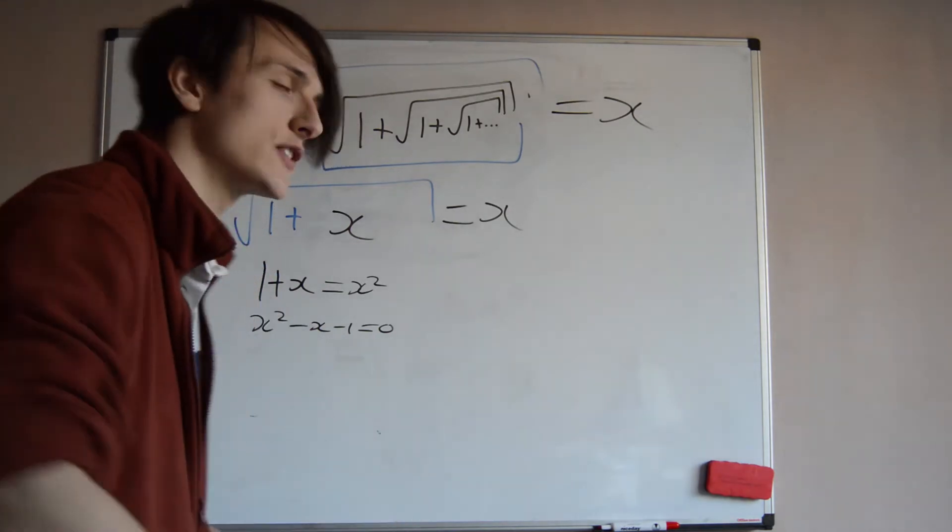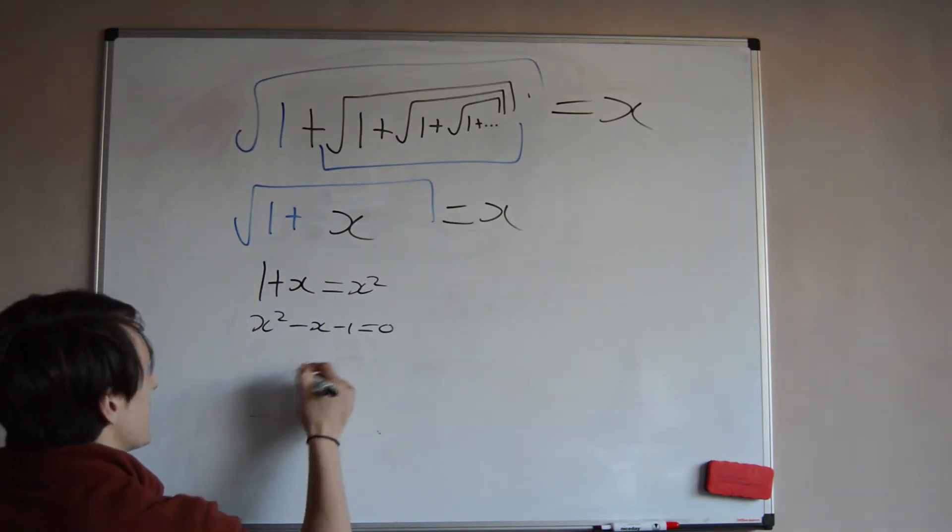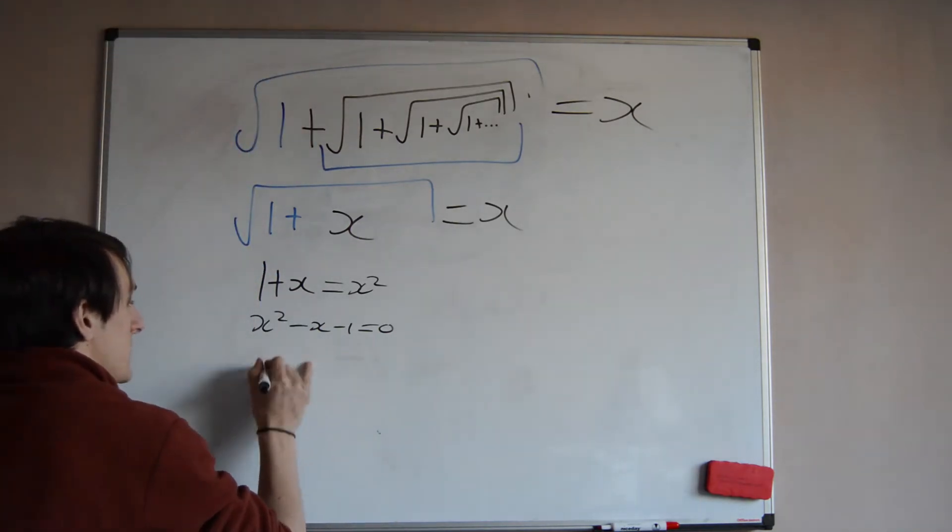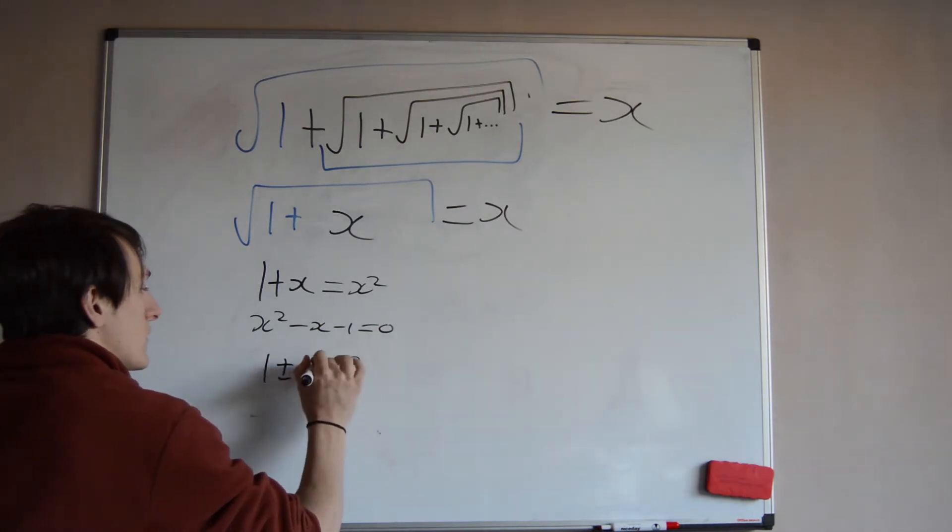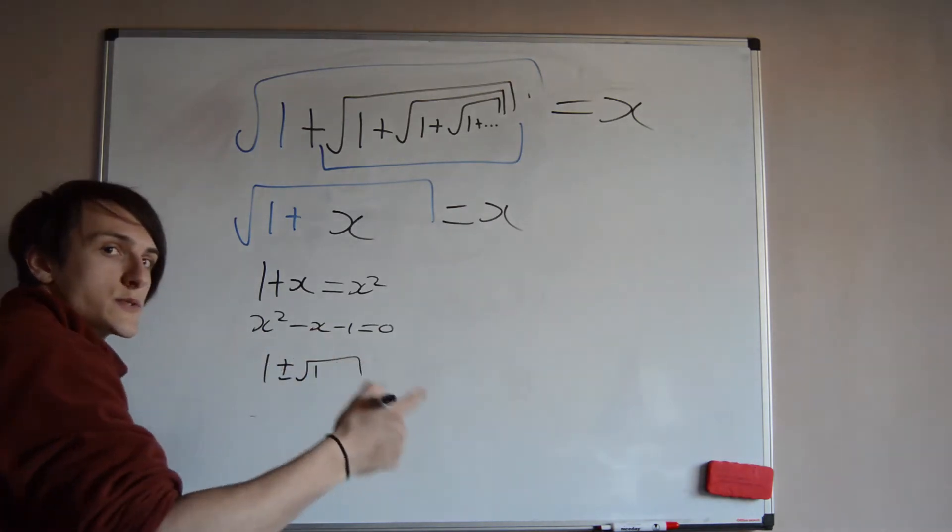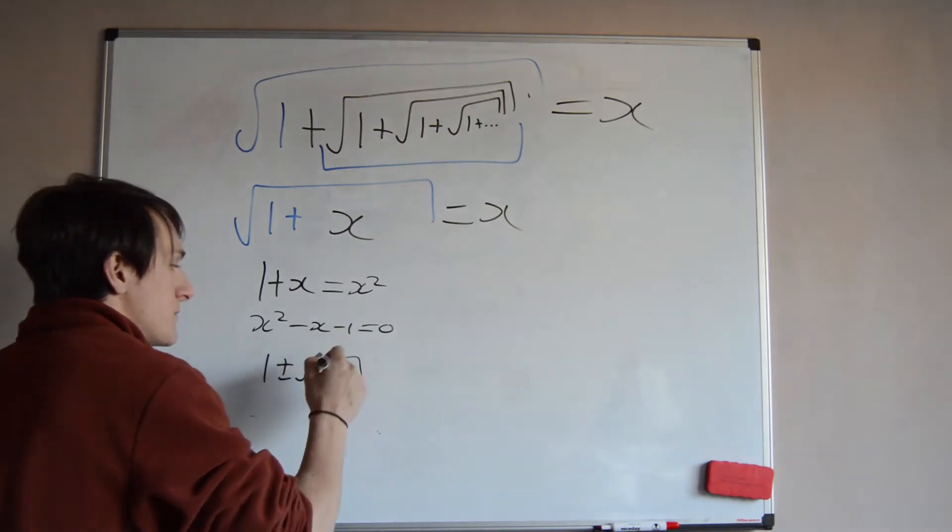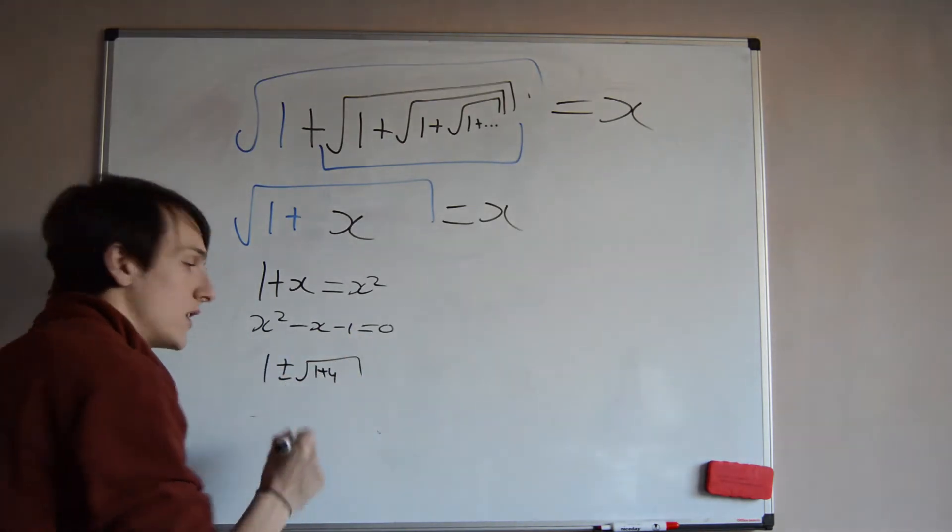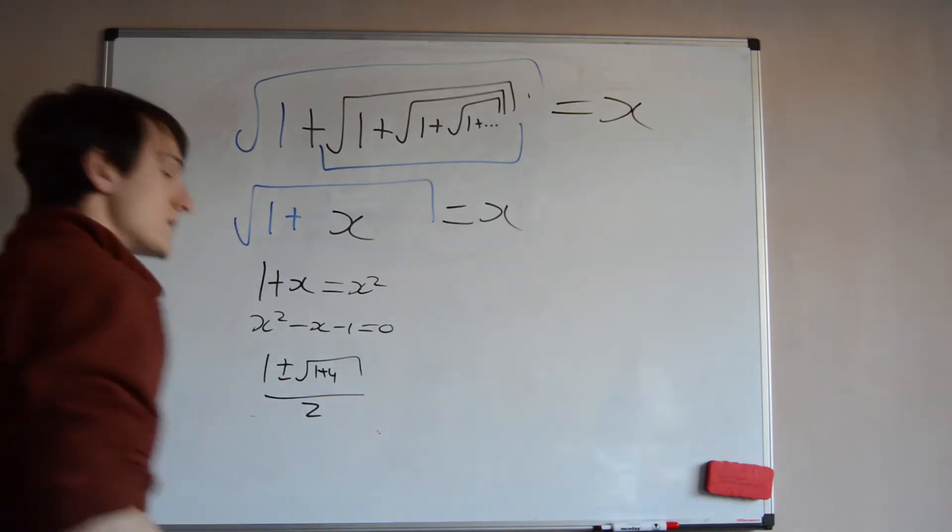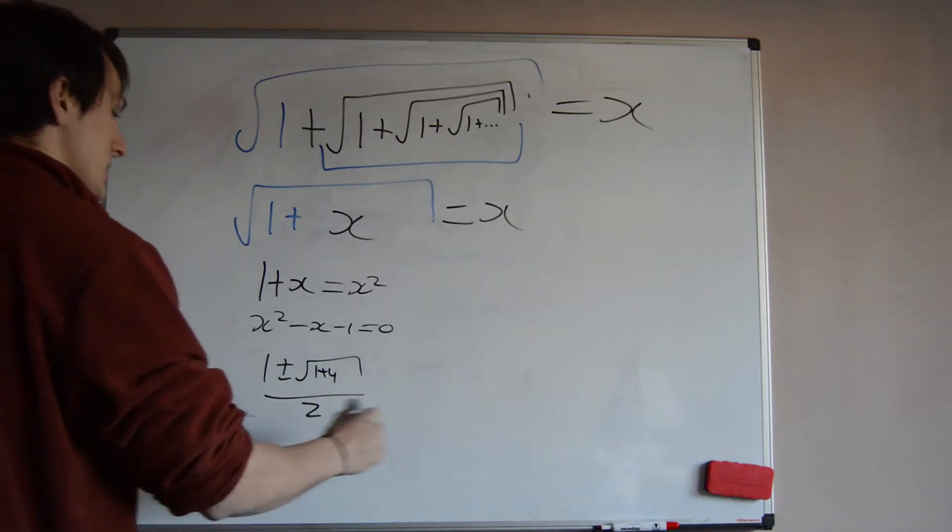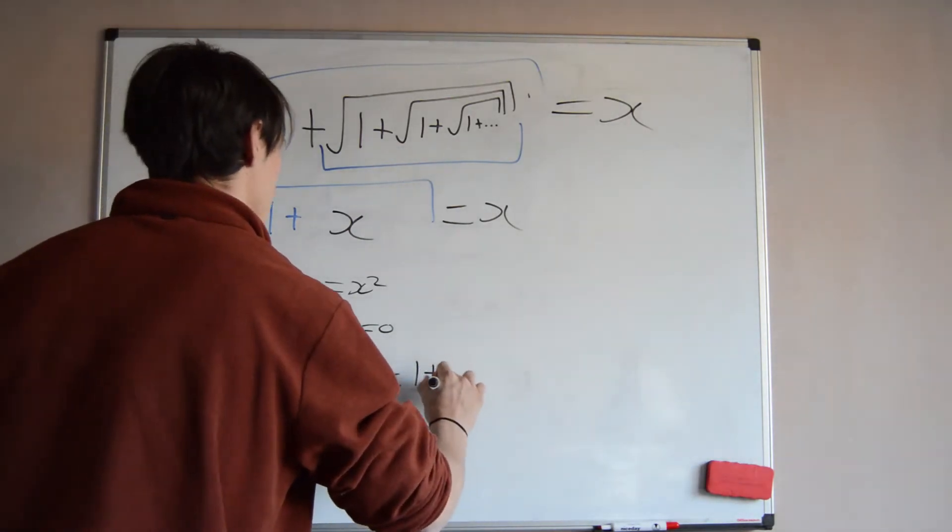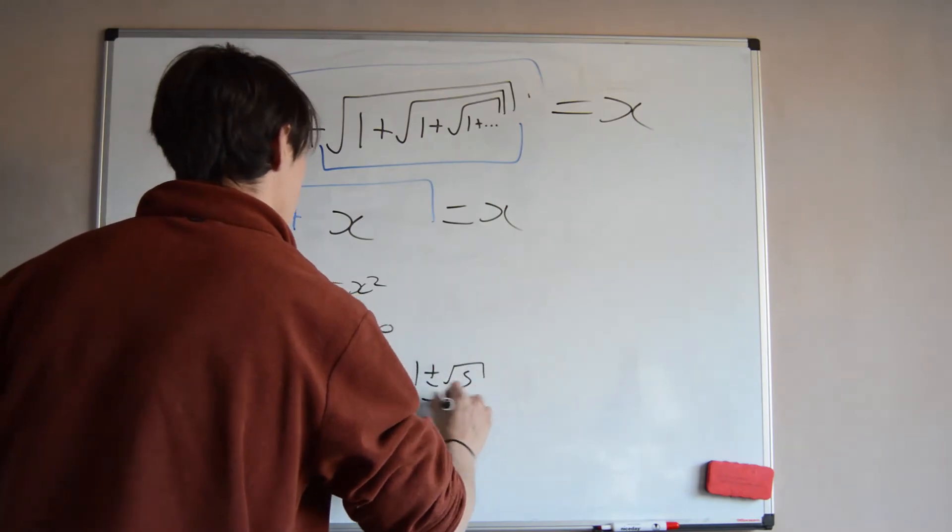Well, we apply the quadratic formula, if you remember that. Look it up. It is negative b plus or minus the square root of b squared, which is minus 1, minus 1 squared is 1, minus 4 times a, which is 1, times c, which is minus 1, which makes this 1 plus 4. And this is all divided by 2 times a, which is 1. So these are two possible answers. So we have 1 plus or minus the square root of 5 over 2.